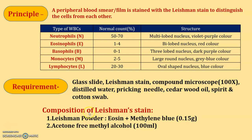To prepare Leishman stain: Leishman's powder is prepared using eosin and methylene blue. This powder is dissolved in acetone-free methyl alcohol. Using these two chemicals, we prepare the Leishman stain.